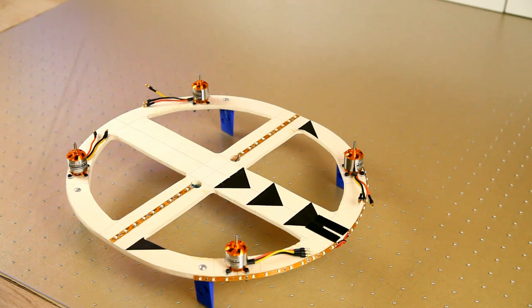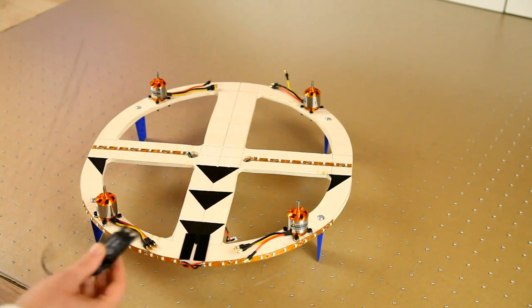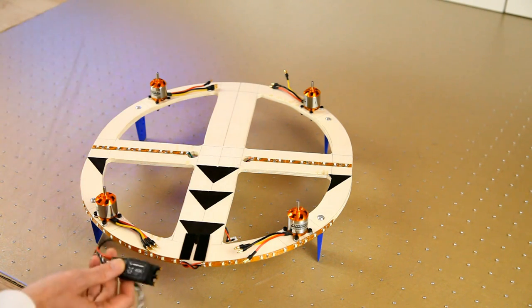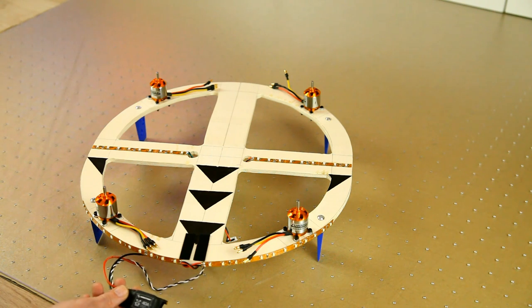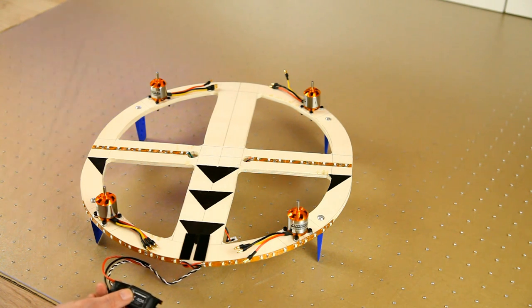Now, of course we also need speed controllers and those also were moved to the foamcopter. So I got four of these. Hobbywing Xcopter 40A speed controllers. Now, 40A is a bit much. Those were the only ones in stock though.